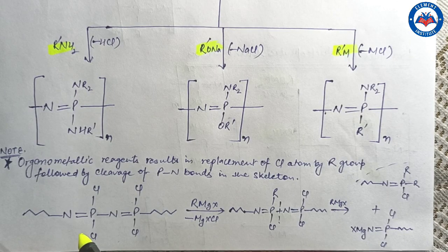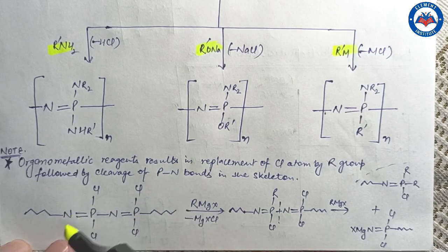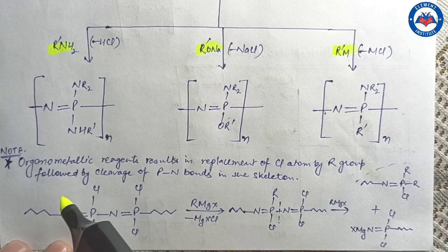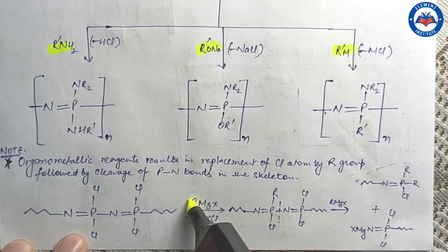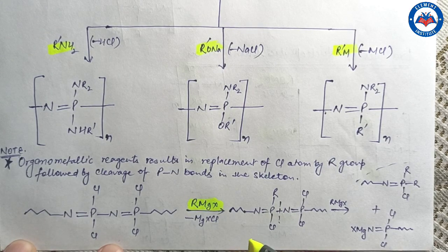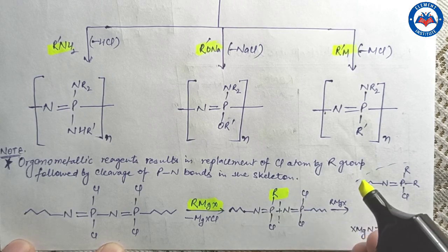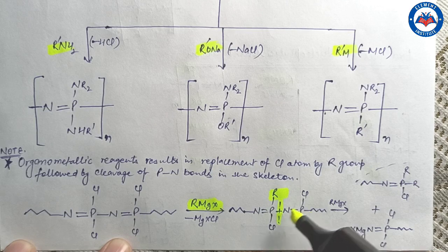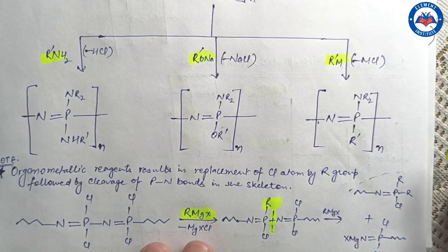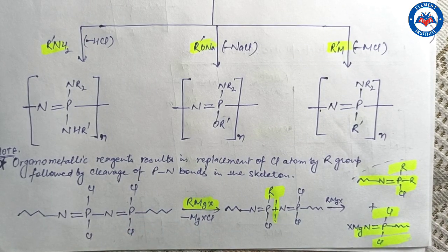Organometallic nucleophiles such as Grignard reagents or organolithium reagents react differently and give more complicated reactions. The reaction of dichlorophosphazene polymers with Grignard reagents or alkyl lithiums results in replacement of one chlorine atom by an alkyl group, accompanied by cleavage of the P–N bond in the skeleton. This results in short-chain molecules or polymers being formed.